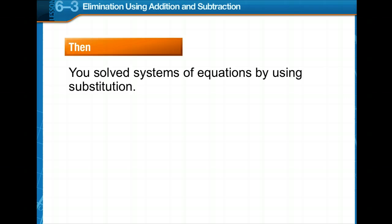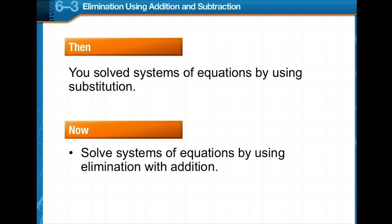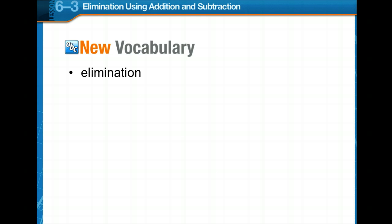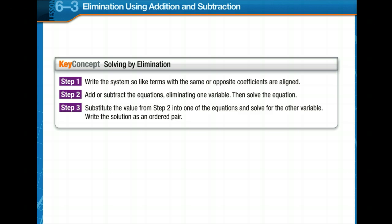Last time you solved systems of equations by using substitution. Today we're going to solve systems of equations by using elimination with addition and with subtraction. Our new vocabulary word is elimination. The key concept is: first, write the system so like terms with the same or opposite coefficients are aligned. Then add or subtract the equations to eliminate one variable. Solve the resulting equation, then substitute back to find the other variable. The solution will be written as an ordered pair.